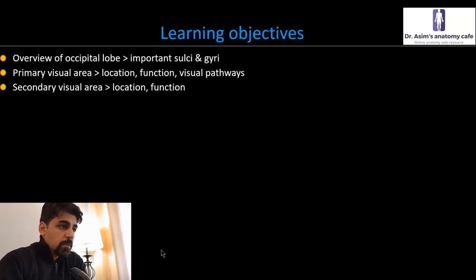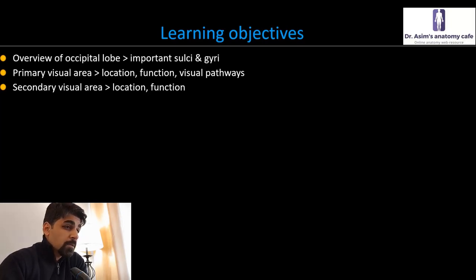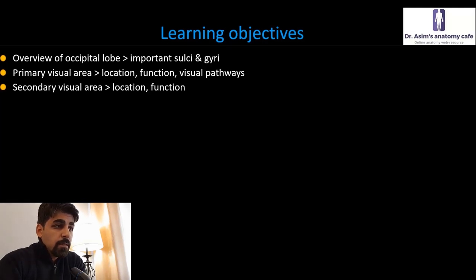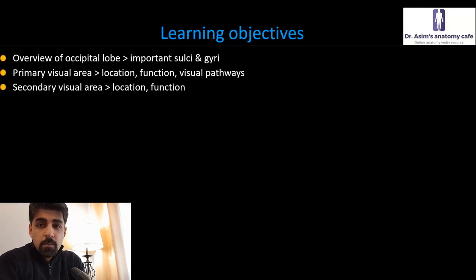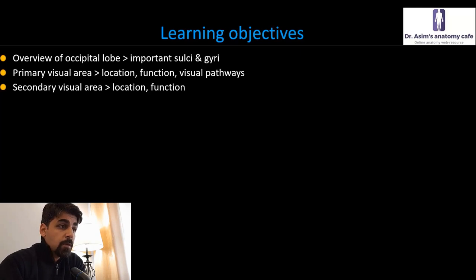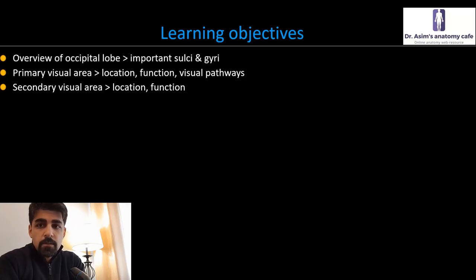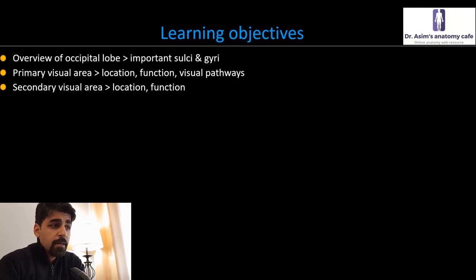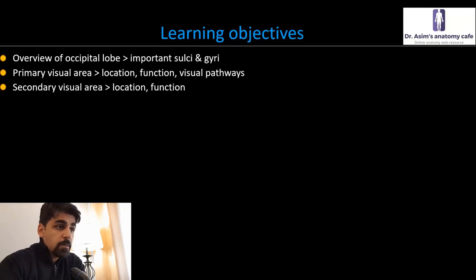To give you a brief overview first, we'll start with a little background about the description of the occipital lobe. We will discuss different important sulci and gyri present inside the occipital lobe, and we'll try to mark out the boundary and extent of the occipital lobe. Then we'll jump over to the primary visual area, where the visual information is primarily going to be received from the visual pathway. We'll talk about the location and function of that visual area, and then contextualize that in the bigger context of the functioning of the visual pathways. Once done, we'll talk about the secondary visual area, its location, and its function.